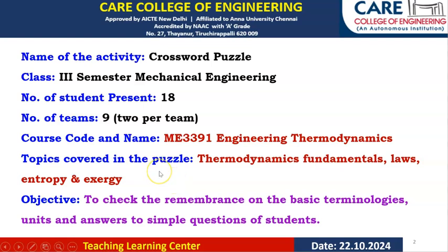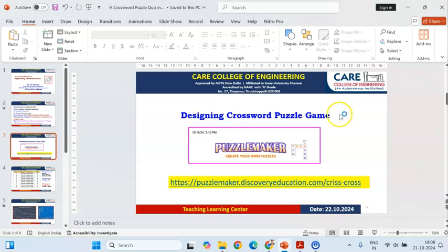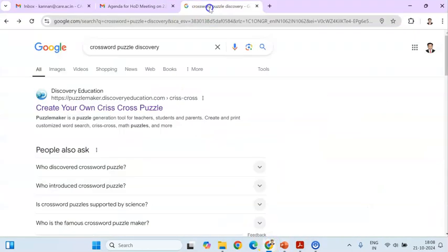The objective of the puzzle is to check the students' remembrance of basic terminologies, units, and answers to simple questions. It is only checking their memory — how effectively they have learned the subject. The tool used for creating the online puzzle is the Puzzle Maker, available at puzzlemaker.discoveryeducation.com.